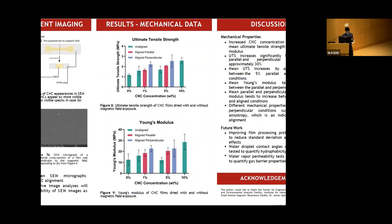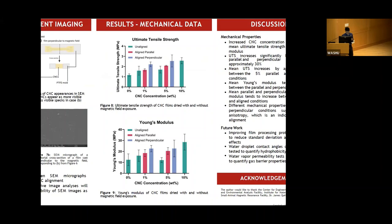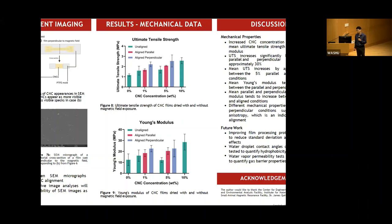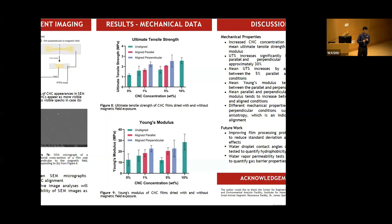Similarly, for Young's modulus, there is a trend of increasing stiffness with CNC addition as expected, significant between 0% and 10%. There is also a trend of increasing Young's modulus between parallel and perpendicular cases, though not significant. But the overall trend suggests that alignment was successfully achieved. This shows we are able to use magnetic fields to align cellulose nanocrystals in a nanocomposite, with the alignment maintained in the dry films, inducing apparent mechanical anisotropy.